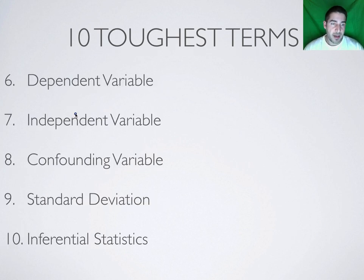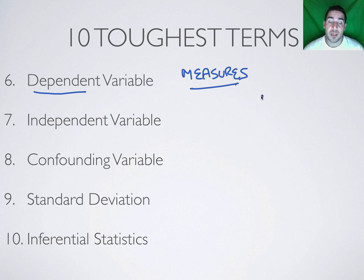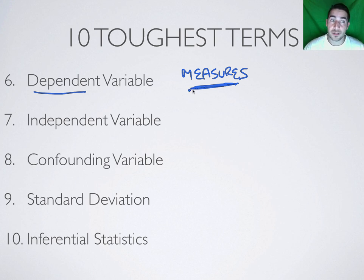Moving on to the last five: dependent and independent variables. We'll start with the dependent variable because it's the first one we want to look at. The dependent variable measures the outcome or the responses of the subjects — the keyword here is 'measures.' What's being measured is your dependent variable. So if I want to see which comedian makes the children laugh more, we're measuring how much they laugh — laughing would be the dependent variable. If I want to find out which dog the kids think is most cute, the level of cuteness would be the dependent variable.